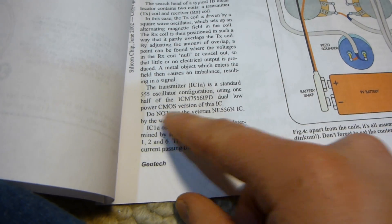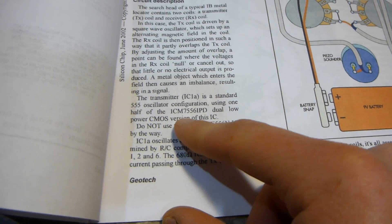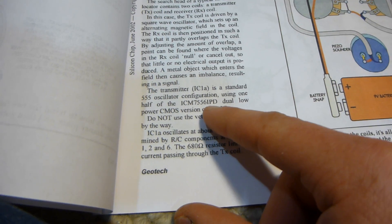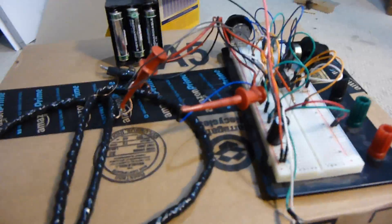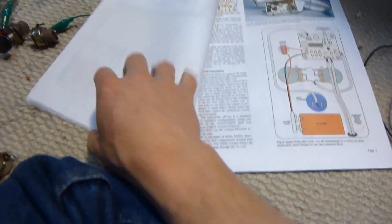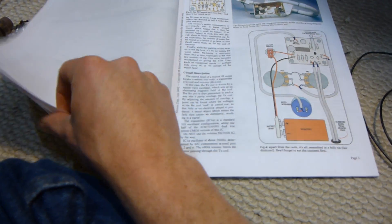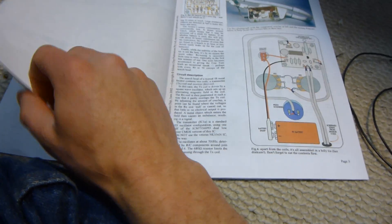So the 555 timer that he actually recommends is the Cosmos version, which is ICM 7556 IPD. The NE556N, the common one, doesn't work. I did try it. It works a little bit, but it draws 100 milliamps and that would drain your batteries really fast. So it's not very efficient, so don't use the common one. You'd have to use one of the low power ones. And mine seems to work okay.